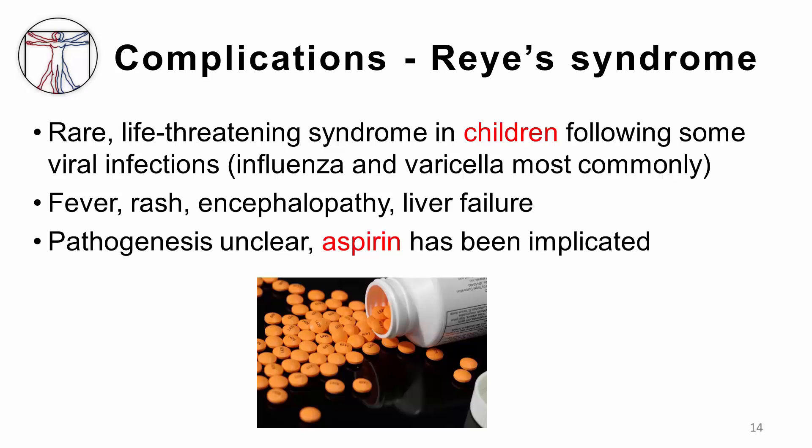One final complication is Reye's syndrome, a rare but severe syndrome almost exclusively seen in children and teenagers in association with a viral illness, most often influenza or varicella infection. The illness is characterized by fever and rash in the prodrome, followed by swelling of the liver and brain leading to encephalopathy, liver failure, and oftentimes death. Supportive care is the only treatment. The exact cause is still unknown, but it is thought to be associated with the use of aspirin, which has led the FDA to require warning labels on aspirin products instructing avoidance in children under the age of 18.